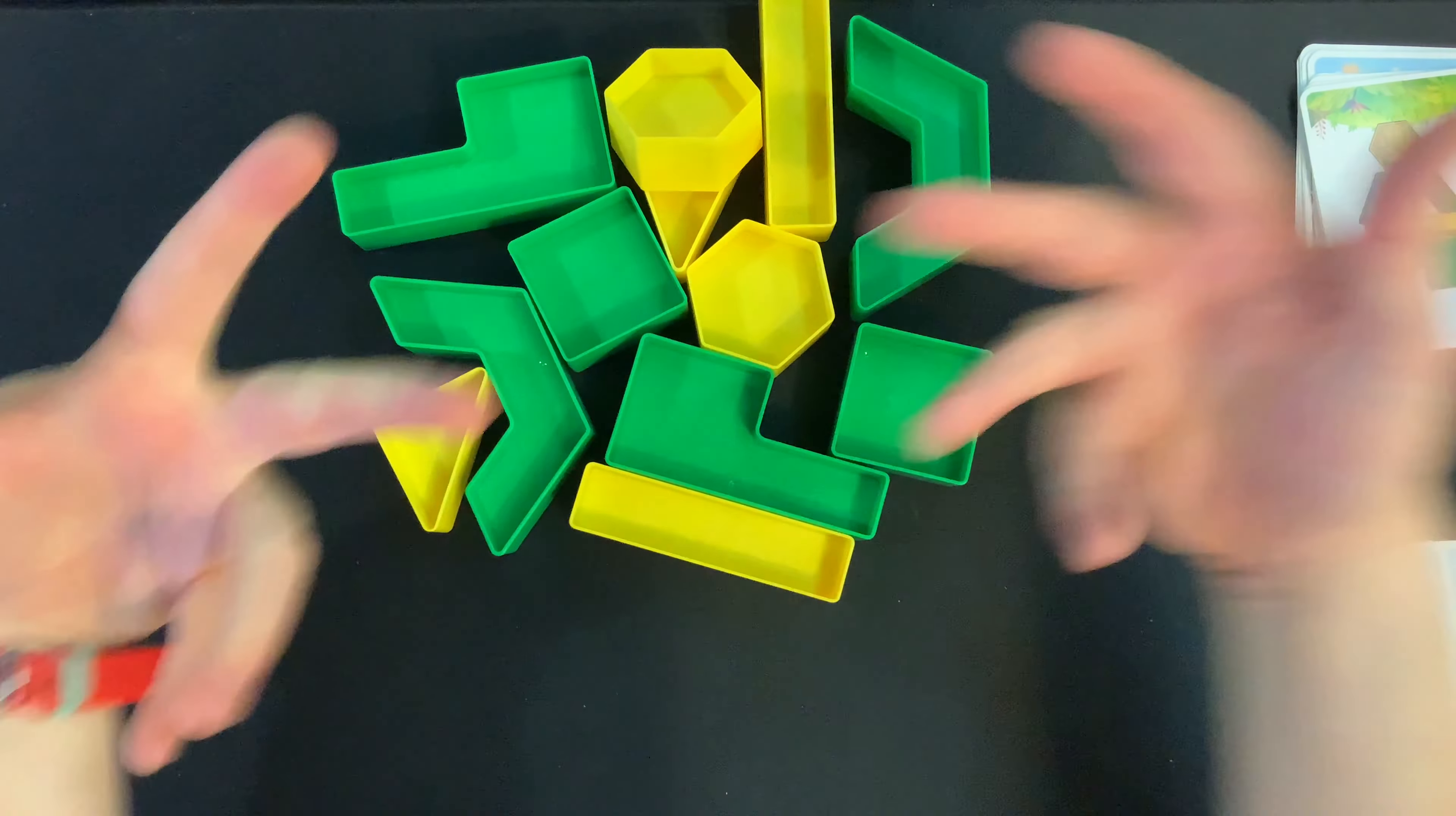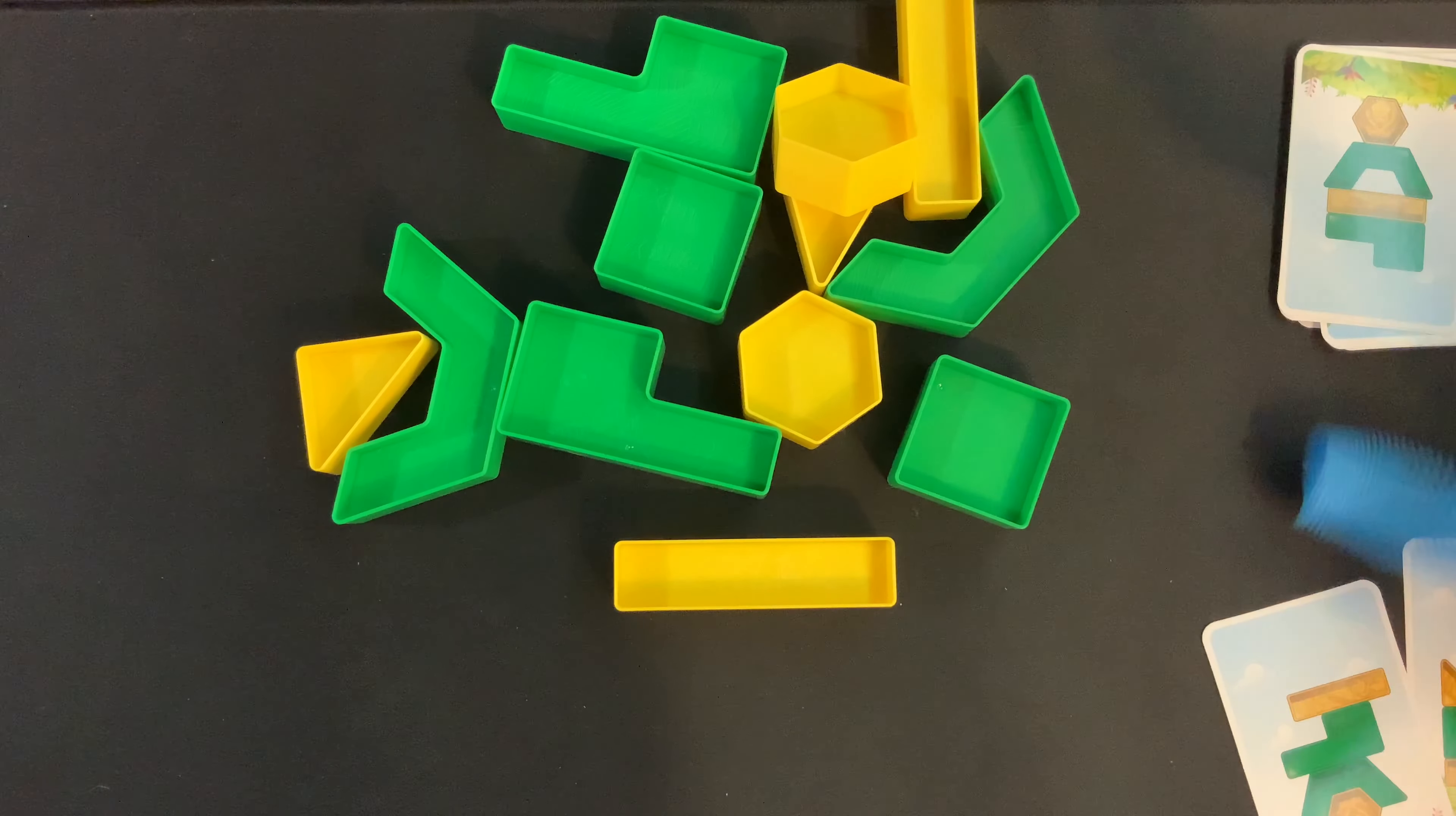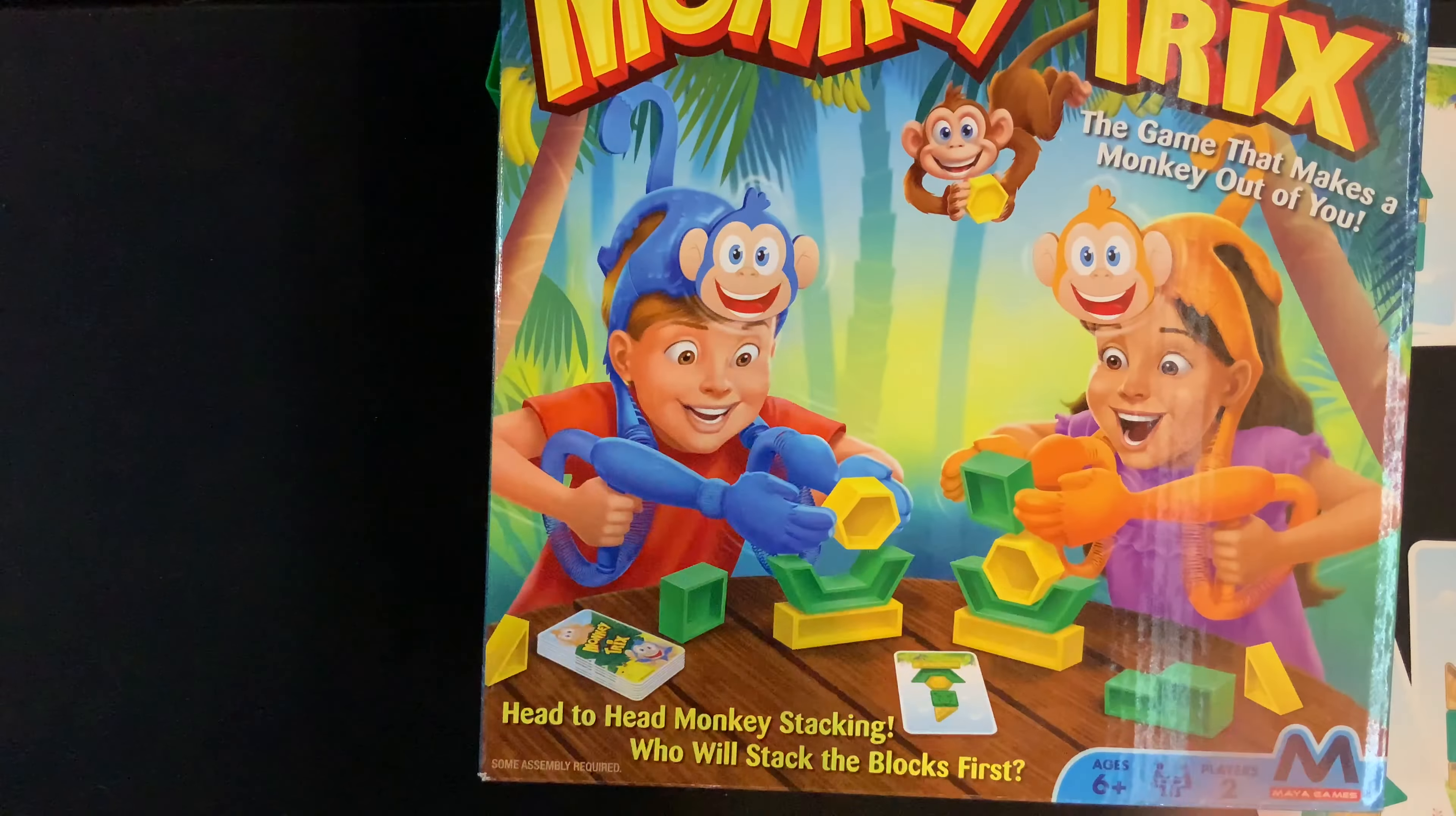The number one rule is to make sure never to use your hands. If you accidentally knock it over, just keep going, but with the monkey hands. The rules don't really cover what to do if someone cheats, so just don't cheat. But that's how you play Monkey Tricks.